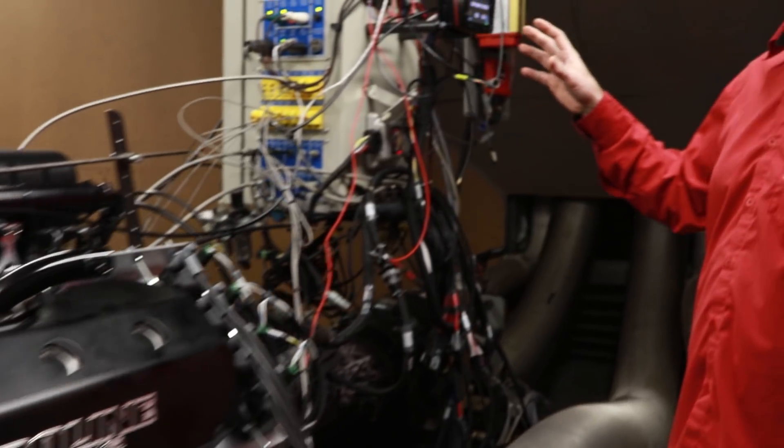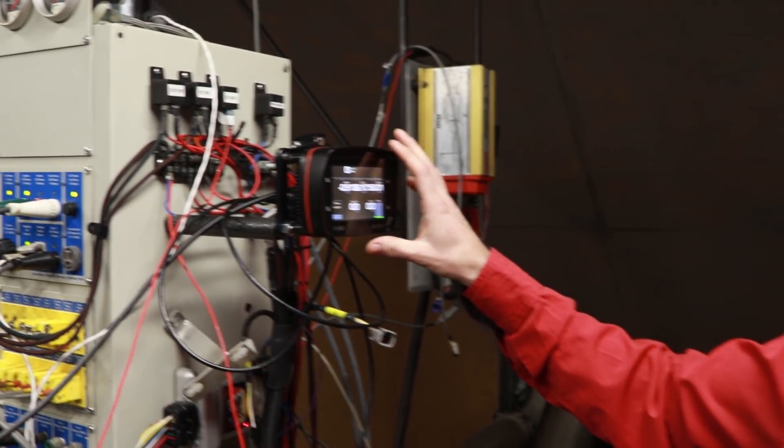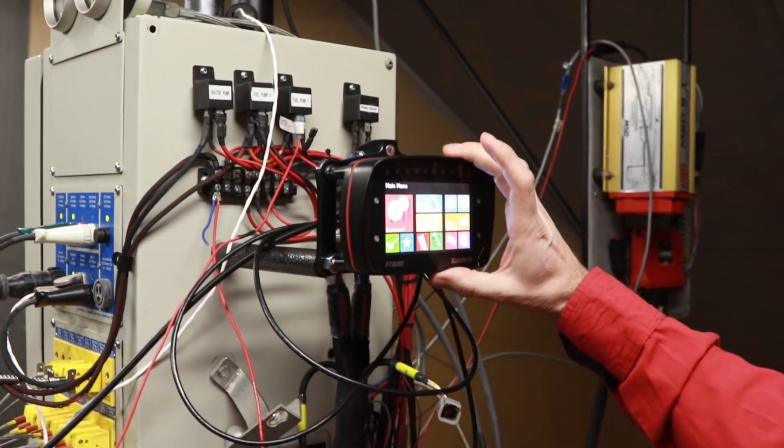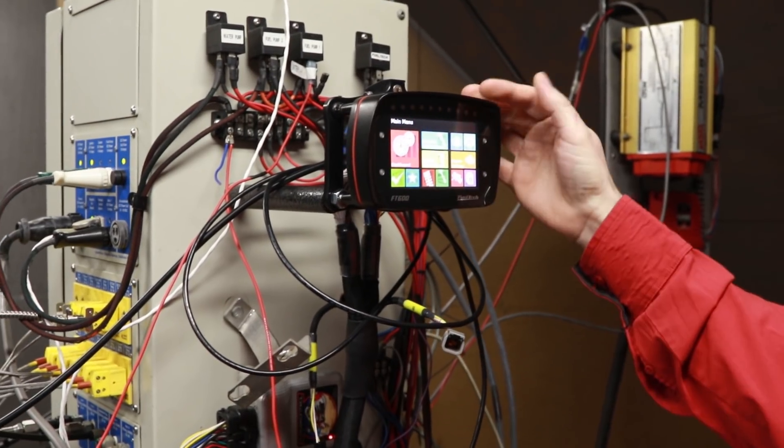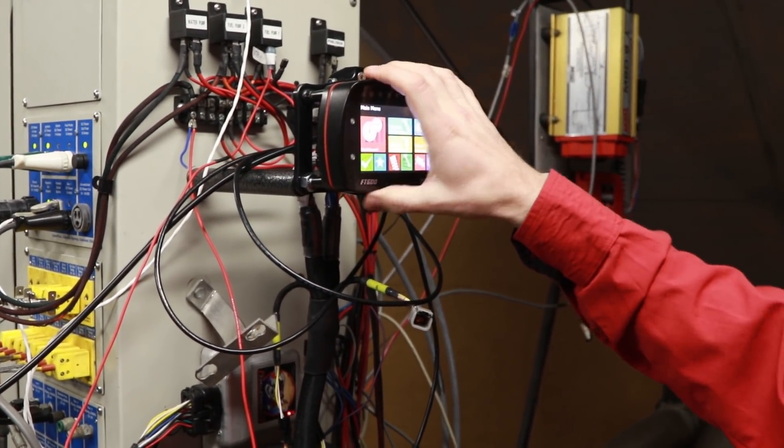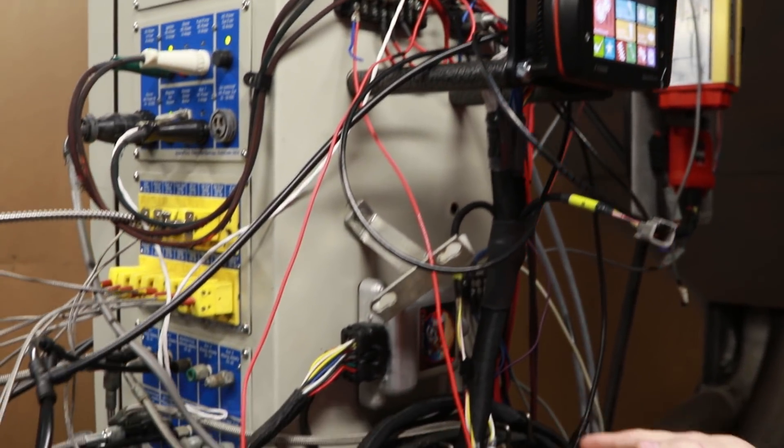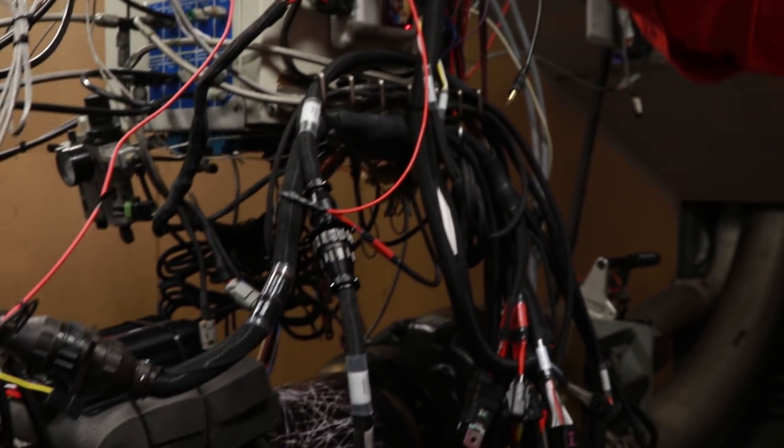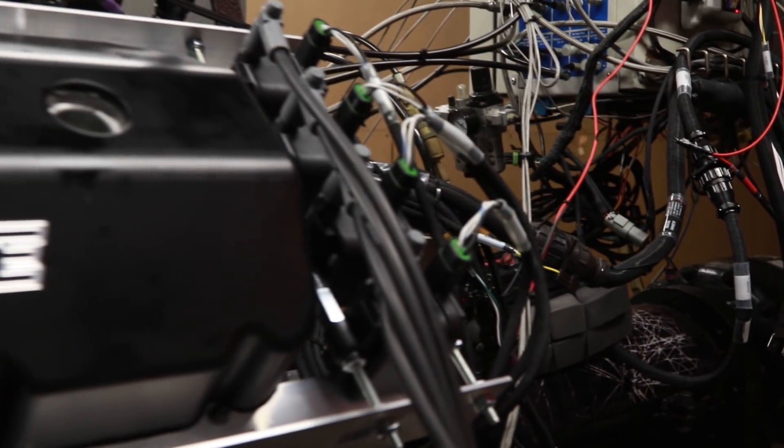It's pretty much the FT600, and this is something interesting: this is the actual computer, not only the display, not only the programmer, it's the actual computer. So you see the harness coming out from here and going all the way to the engine and wiring directly to the sensors.